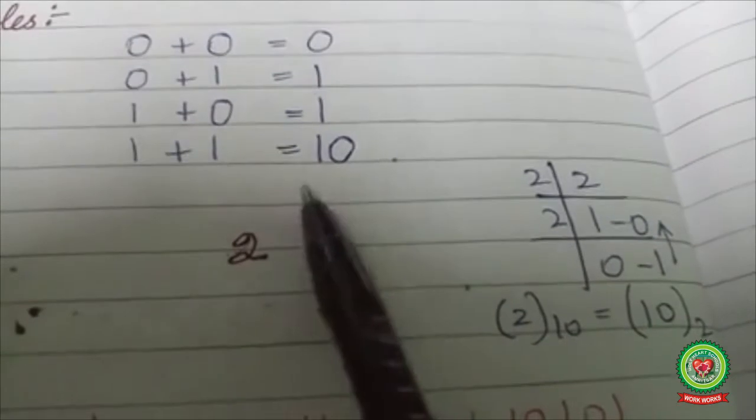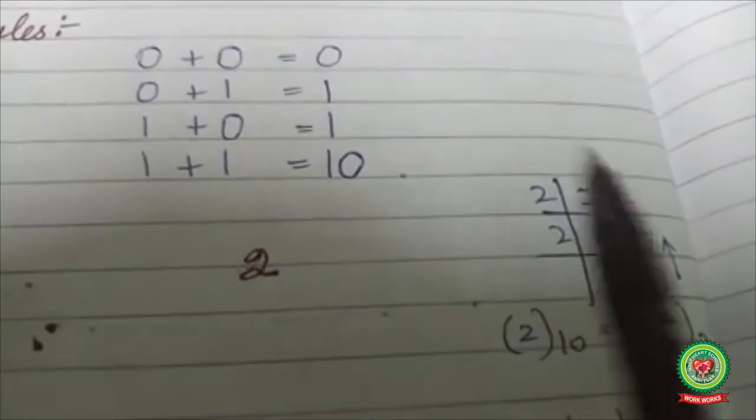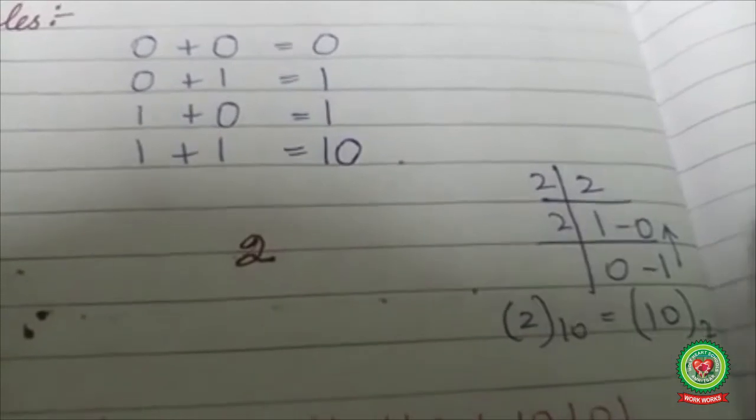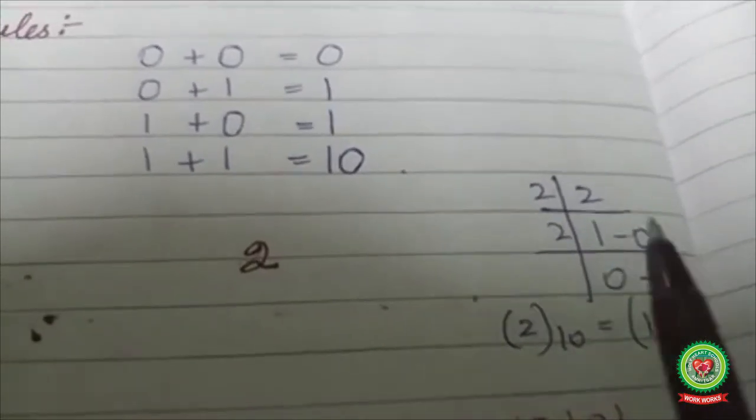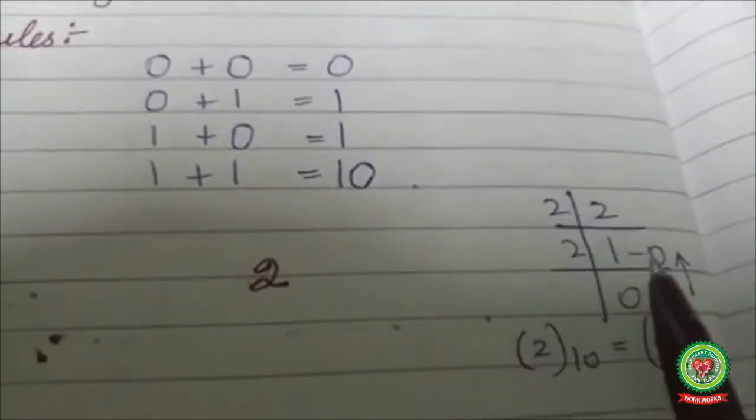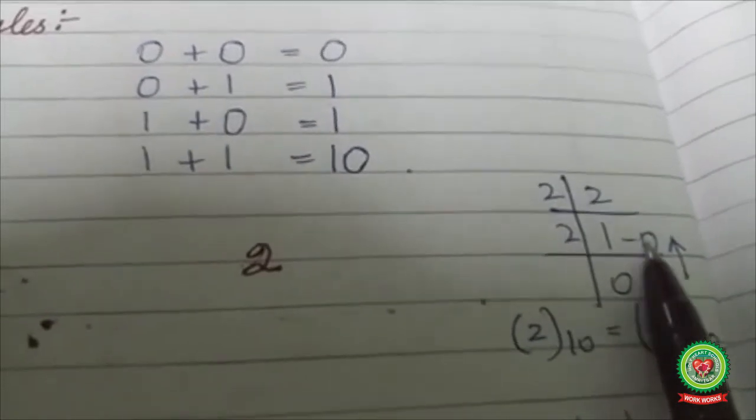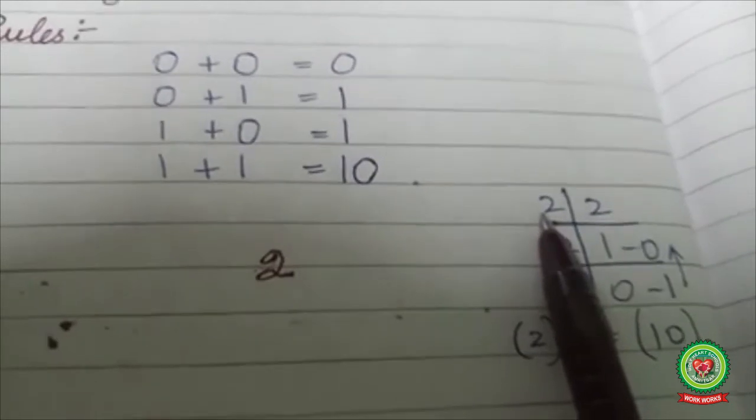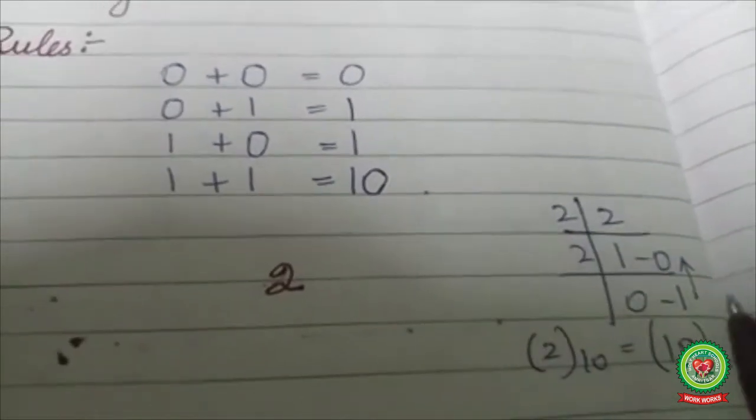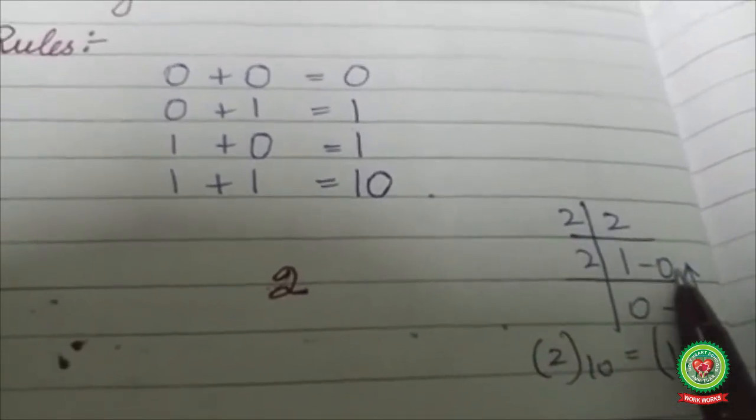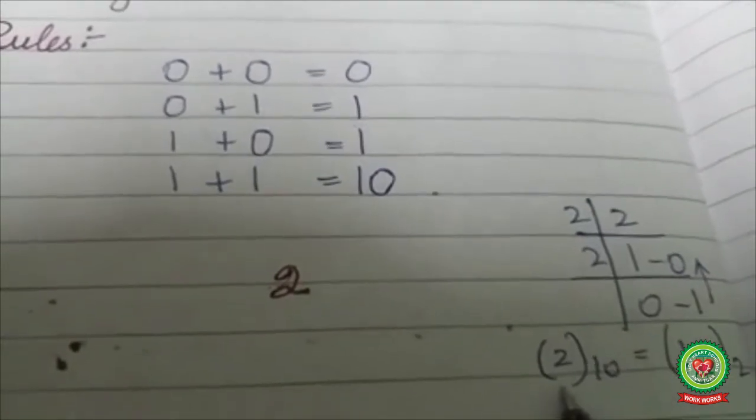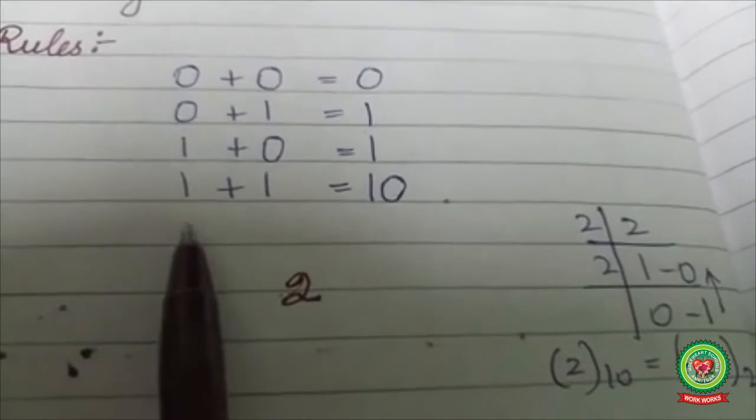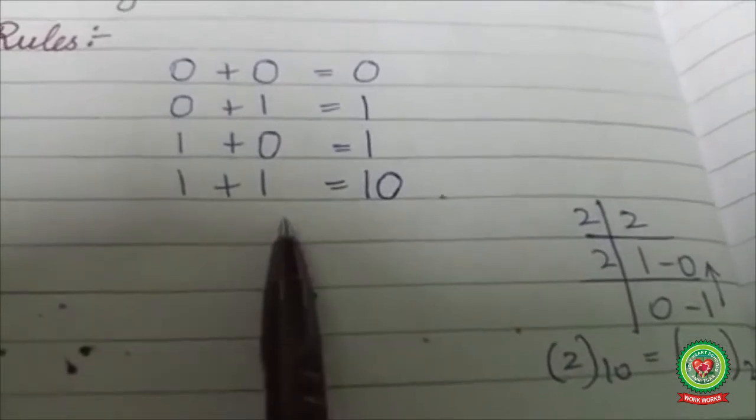Let's see how this 10 is formed. You all know how to convert the decimal number 2 into a binary number: by writing the remainders as a result of dividing the number by 2 and then writing the remainders in reverse order. So 2 equals 10.